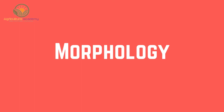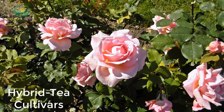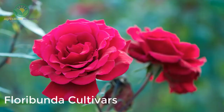Morphology of the Rose Plant. The rose has sympodial growth with a terminal inflorescence. Flowers can be solitary, as seen in the hybrid tea cultivars, or multiple, as seen in the floribunda cultivars.